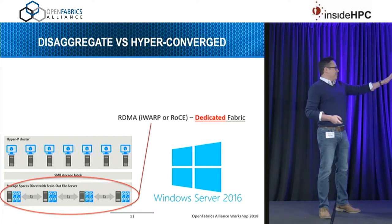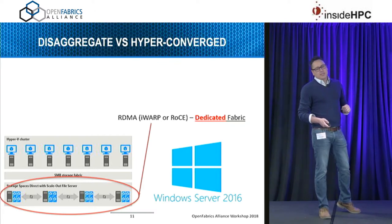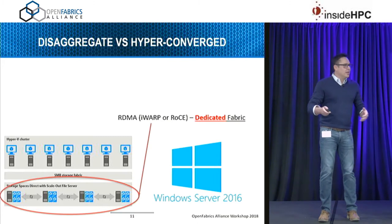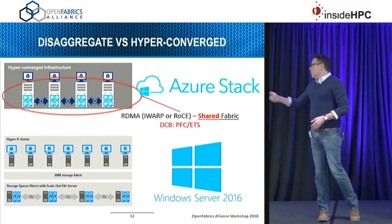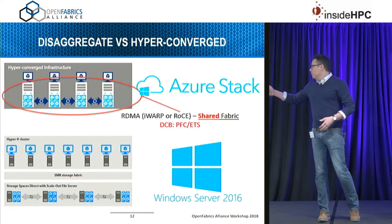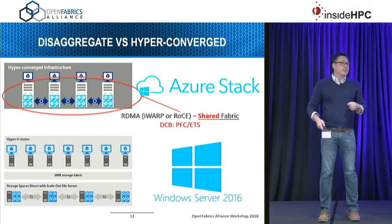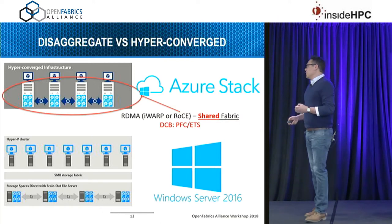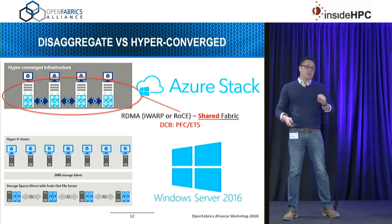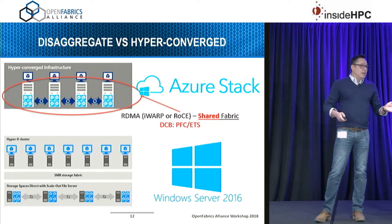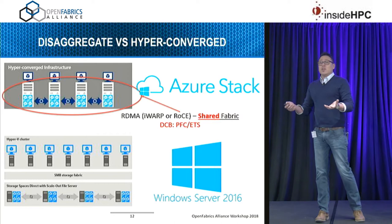Going back in time, we look at disaggregated storage — back in the day it was an over-provisioned Fibre Channel fabric, and deploying RDMA on that over-provisioned fabric just works, regardless of RoCE or iWarp. However, when we get into the hyper-converged space, that fabric is shared. Now VMs are injecting traffic on the same fabric, separate from RDMA traffic. They can be noisy and push RDMA traffic out of the way, so it really comes down to how you configure your fabric.